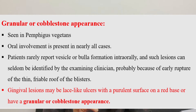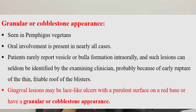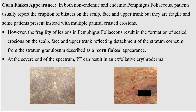Coming to gingival cobblestone appearance, which is seen in pemphigus vegetans. The gingival lesions may be lace-like ulcers with a purulent surface on a red base, giving a granular or cobblestone appearance.